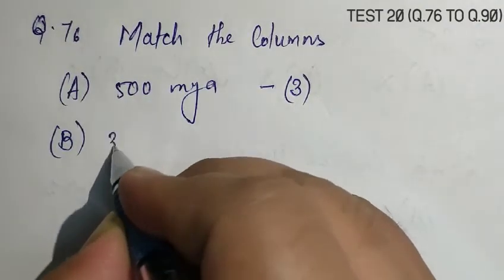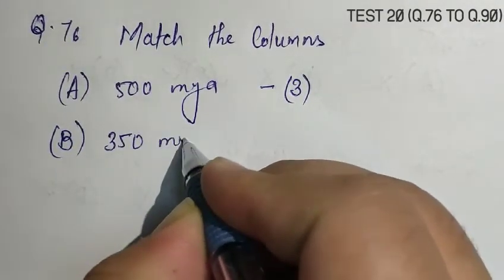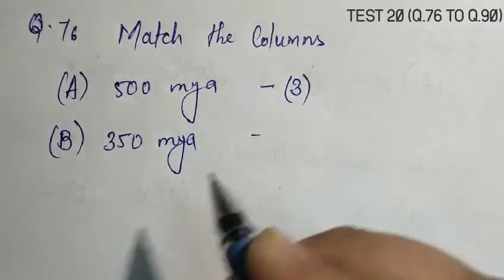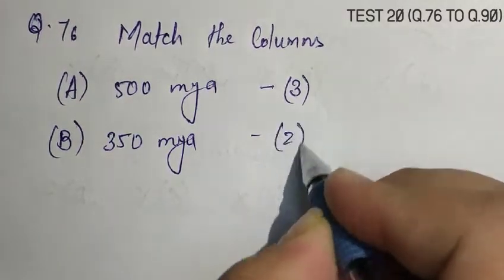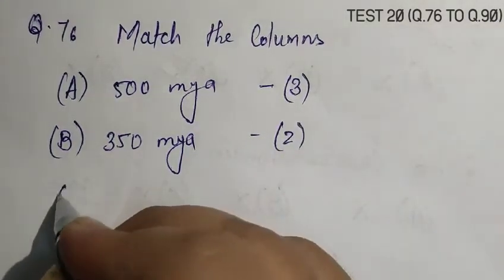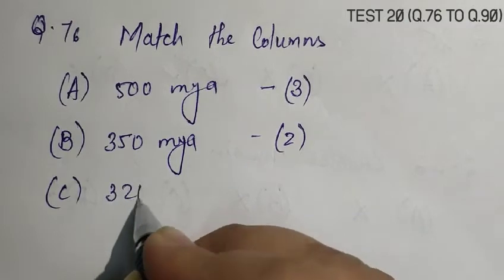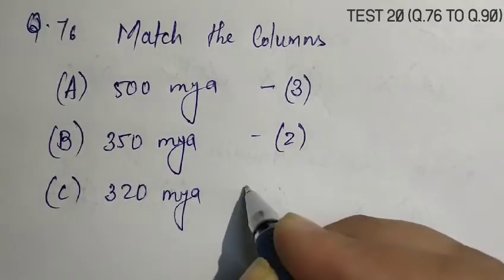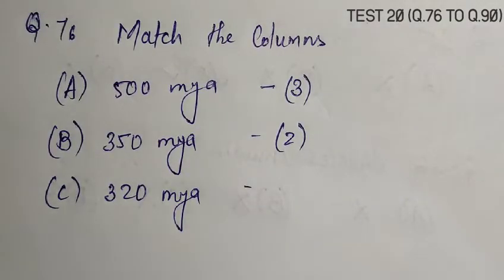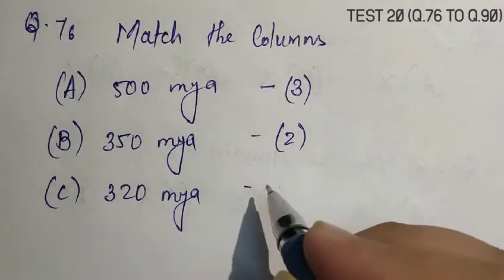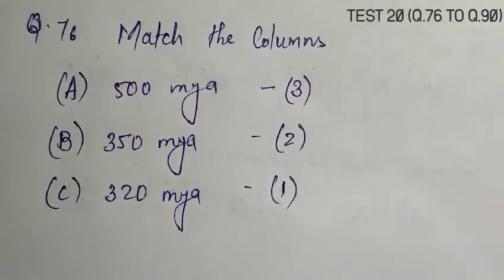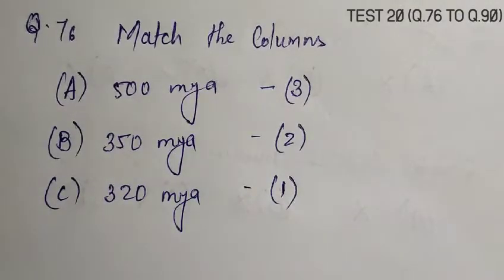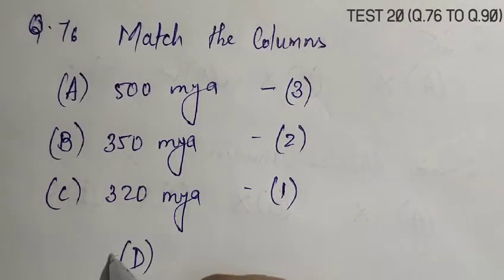B: 350 million years ago, that lead to the development of jawless fishes, and C: 320 million years ago, that lead to the development of seaweeds and few plants. So, the correct answer is B.